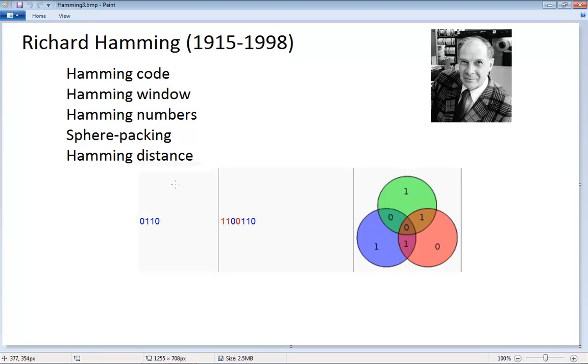Richard Hamming was working on this project of how to better enter data into computers and how to empower computers to perhaps even self-correct some of those errors. Richard Hamming contributed things like the Hamming Code, the Hamming Window, Hamming Numbers, the Sphere Packing, as well as the Hamming Distance.